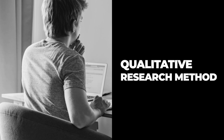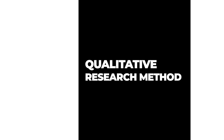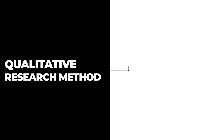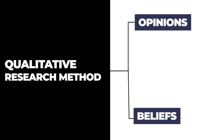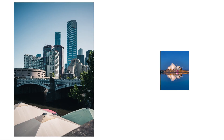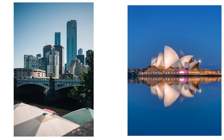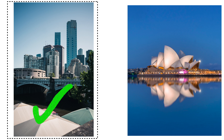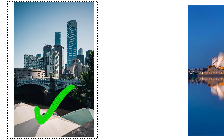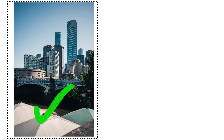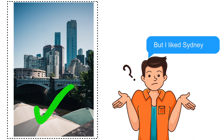Now let's take a look at the qualitative research method. Qualitative method measures subjective data which includes opinions and beliefs. As they are subjective, they are very difficult to defend sometimes. For example, you might prefer Melbourne over Sydney because Melbourne is culturally rich. This is an opinion made by you which may not be true for another person.